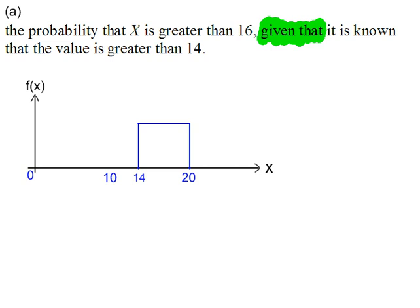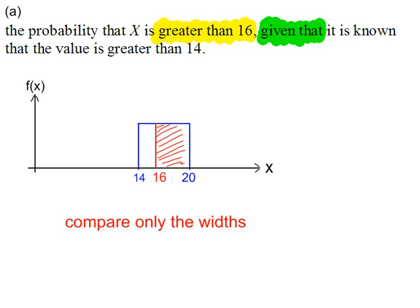So this is the restricted graph, and we're looking for the probability that x is greater than 16. You'll see that I've removed all of the other numbers on the sketch, so we're only going to compare the two widths that you can see on the sketch now.